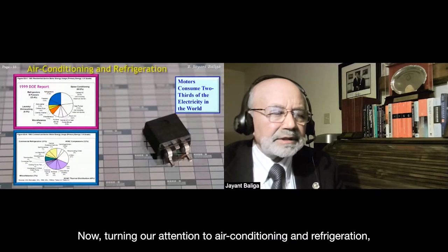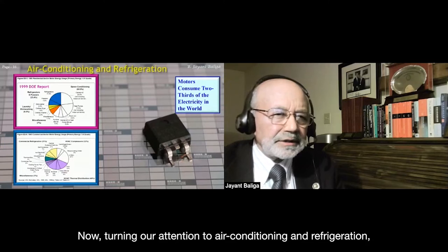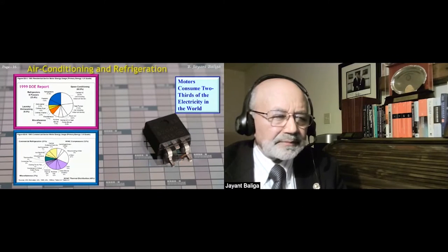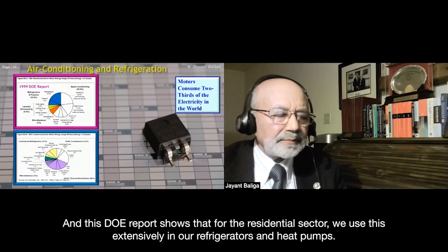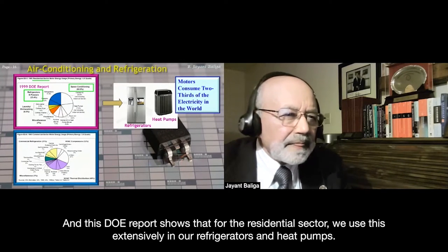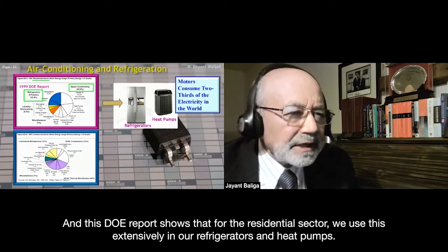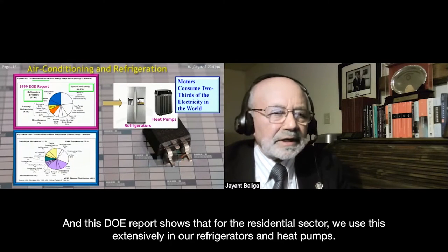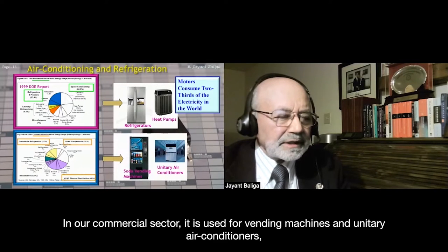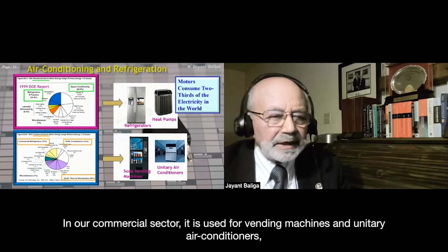Turning to air conditioning and refrigeration: motors are very prevalent in our society and consume about two-thirds of all the electricity delivered in the world. A DOE report shows that for the residential sector, this is used extensively in refrigerators and heat pumps; and in the commercial sector, for vending machines and unitary air conditioners — large air conditioners for buildings.